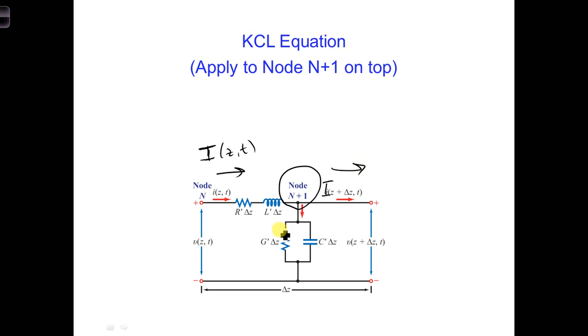And then we have the current voltage relationship for a capacitor here: C dV/dt is equal to I.